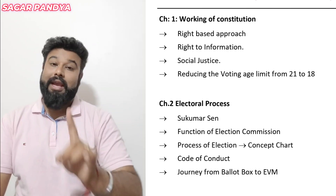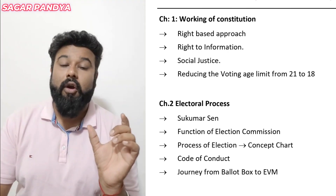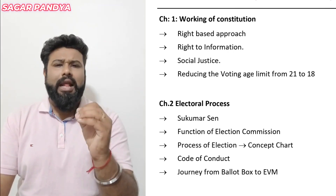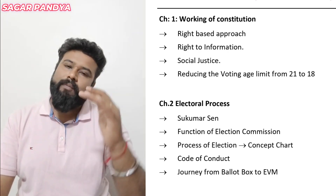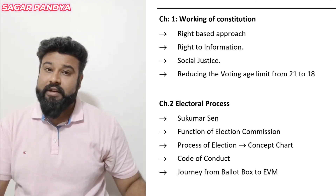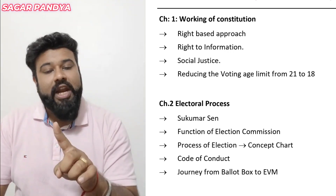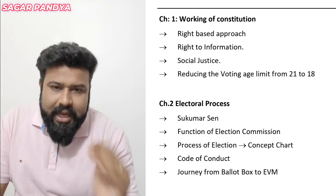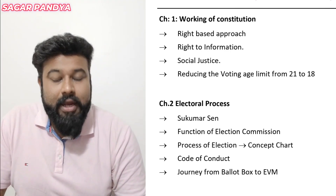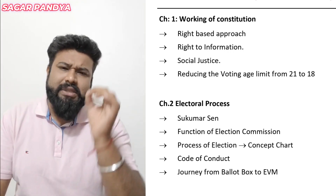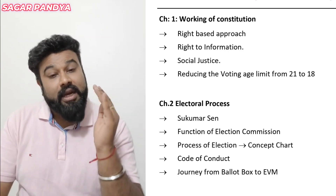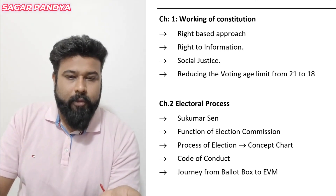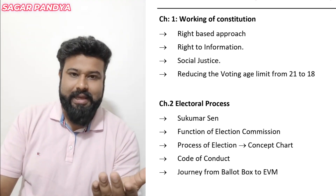In Working of the Constitution, focus on: right-based approach, right to information, social justice, and reducing the voters' age limit from 21 to 18. In the Electoral Process chapter, focus on elections and the functions of the Election Commission — you can confidently write that answer. There is another important answer: Code of Conduct, which can be expected as it was asked in the last exam.